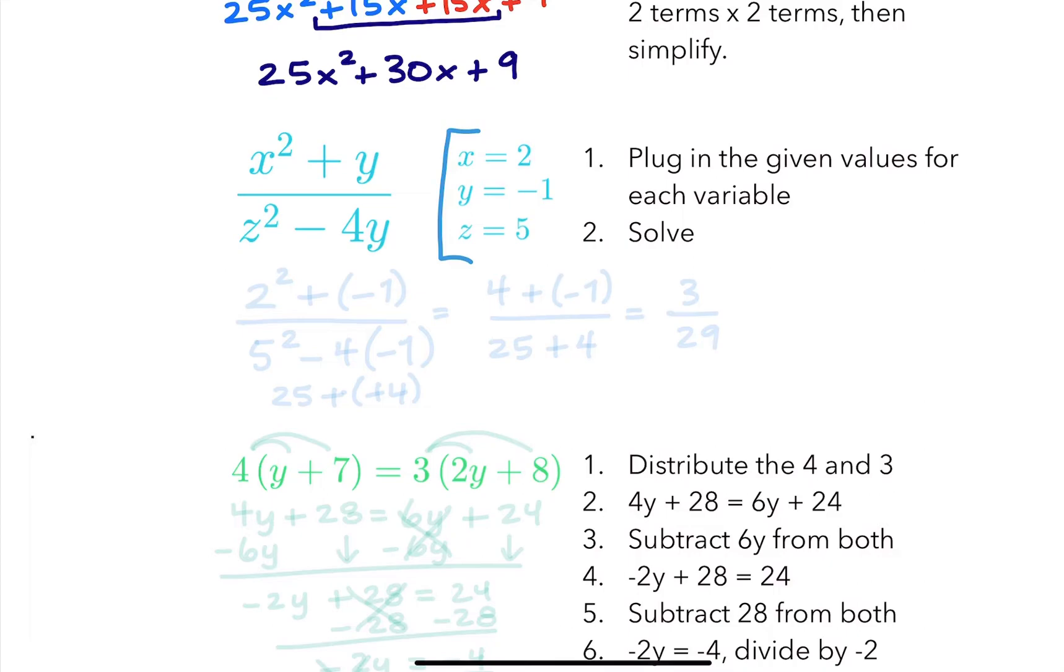So for x, I've got x squared, that's 2 squared plus y, y is negative 1, all over z squared, so z is 5, so 5 squared minus 4 times y. So now we just evaluate this, now that the numbers have all been plugged in for the variables.